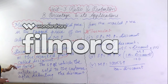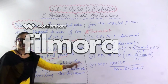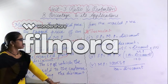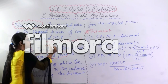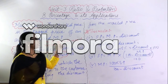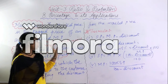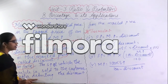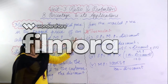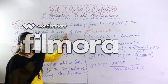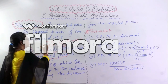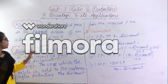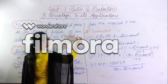Net price means the selling price at which the article is sold to the customer after deducting the discount. So after getting 10% discount on the mark price, the amount you actually pay is the net price. Mark price is also known as list price or listed price, and discount is generally given in percentage.